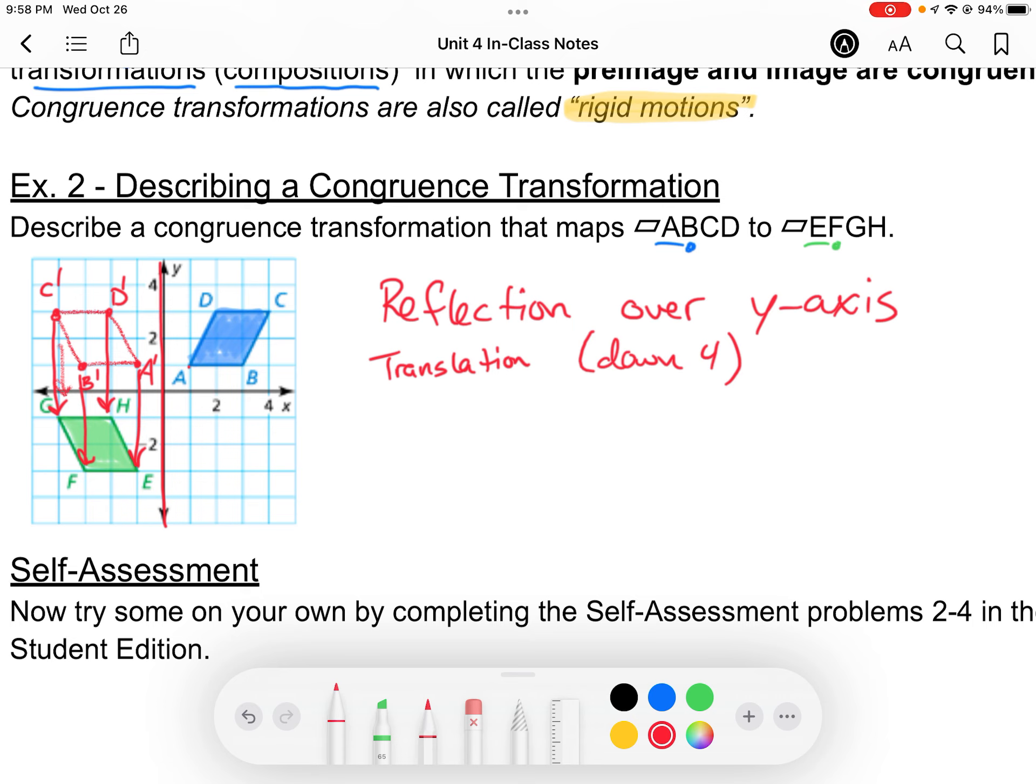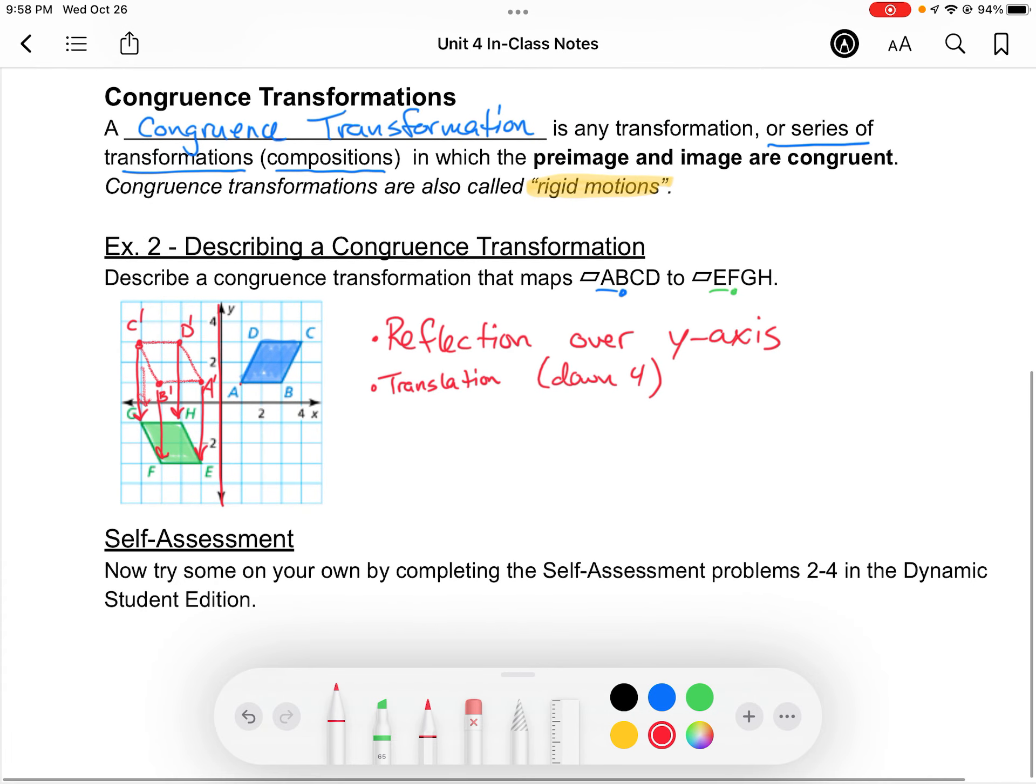Then it just takes a translation of moving this point down four or any of these points down four. And that is my congruence transformation. There's two steps to it. First, we do a reflection, then we do a translation. Now, that's not the only way we could have done this. That's one way I chose to show you.